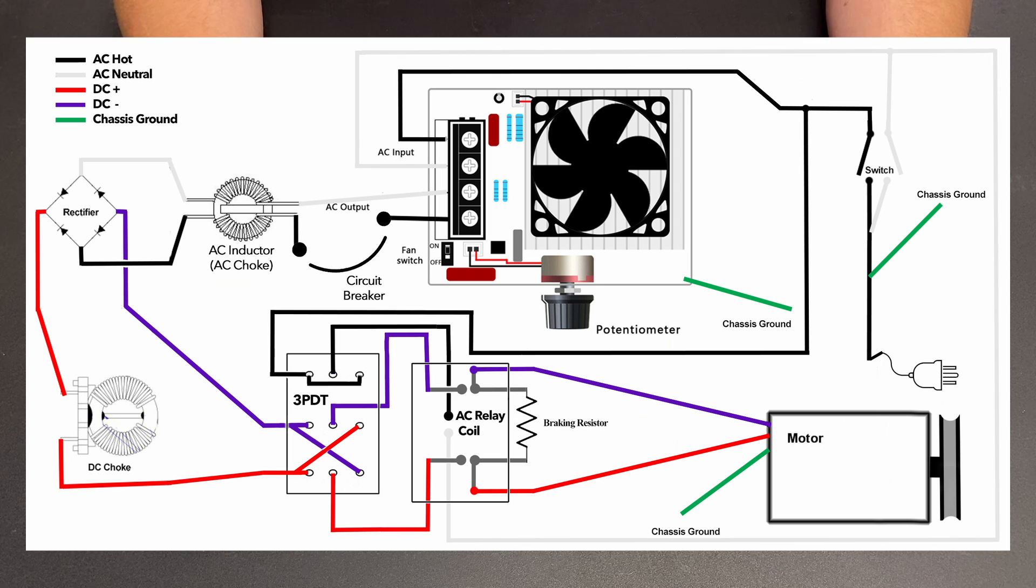From the triple pole double throw switch, we have both the DC current that powers the motor going into the relay, and we also have the AC current that is going to actuate the coil in the relay. On the other leg of the relay, we have the motor and the resistor.